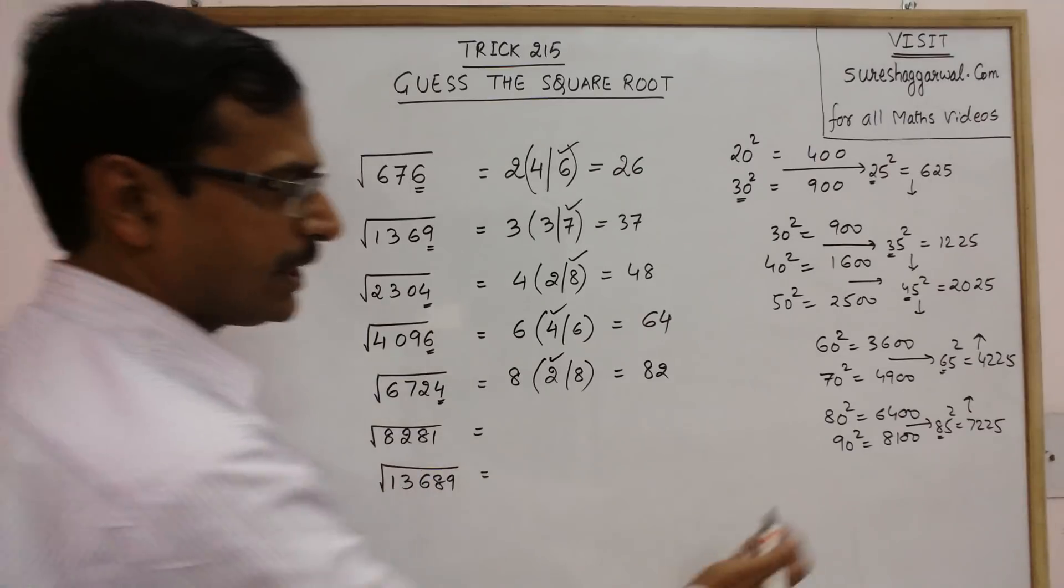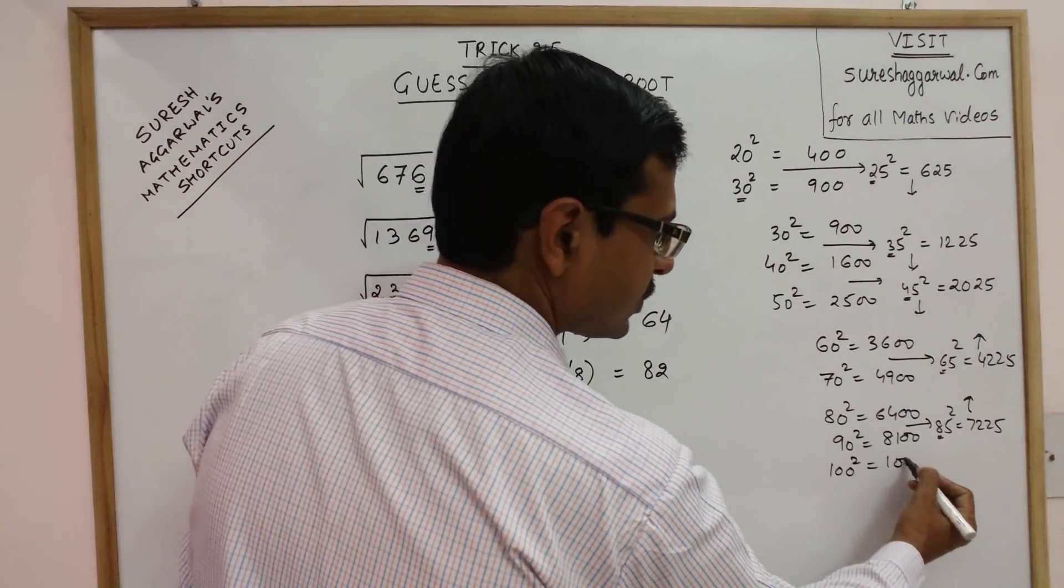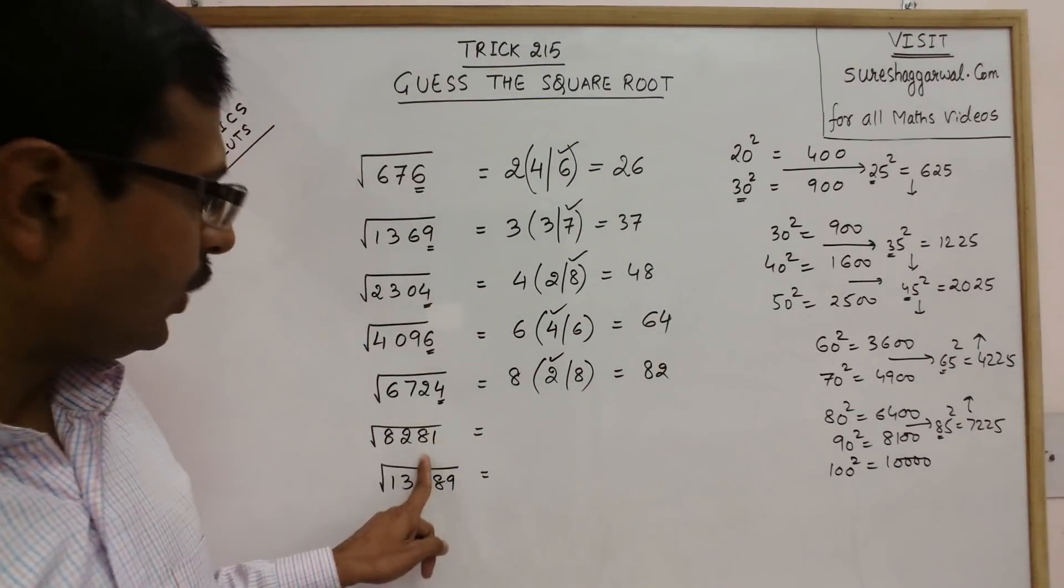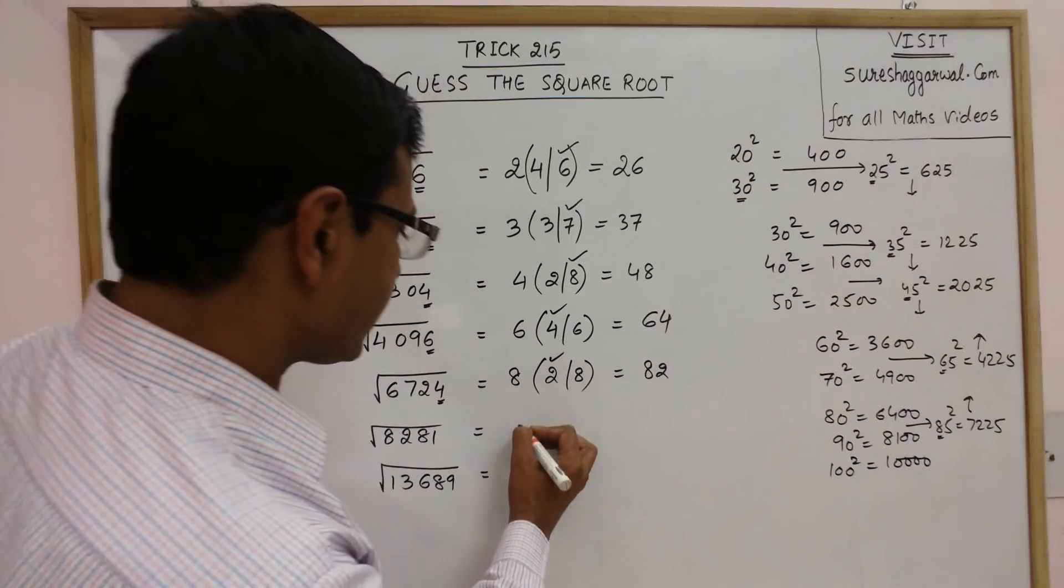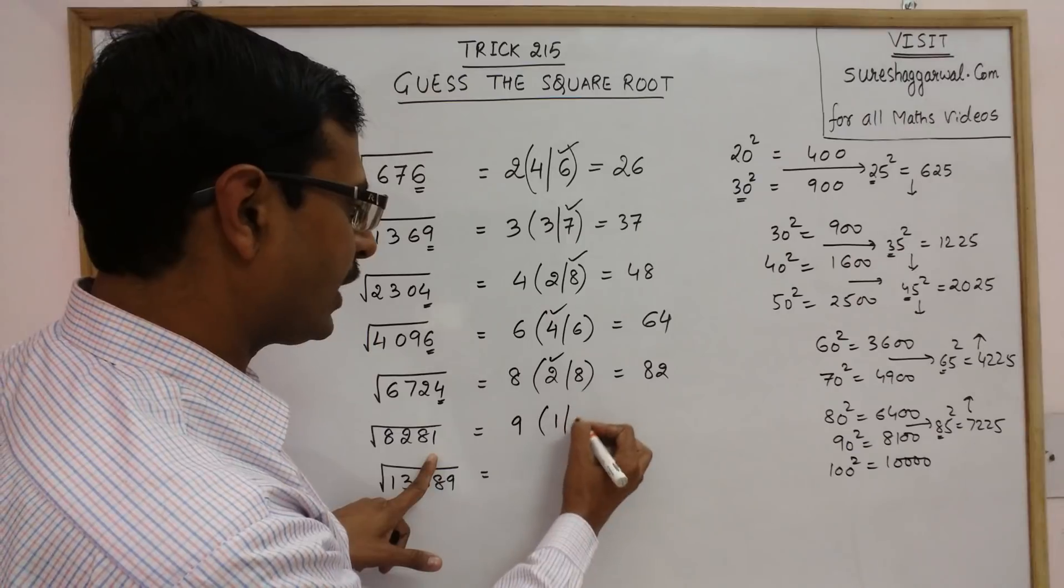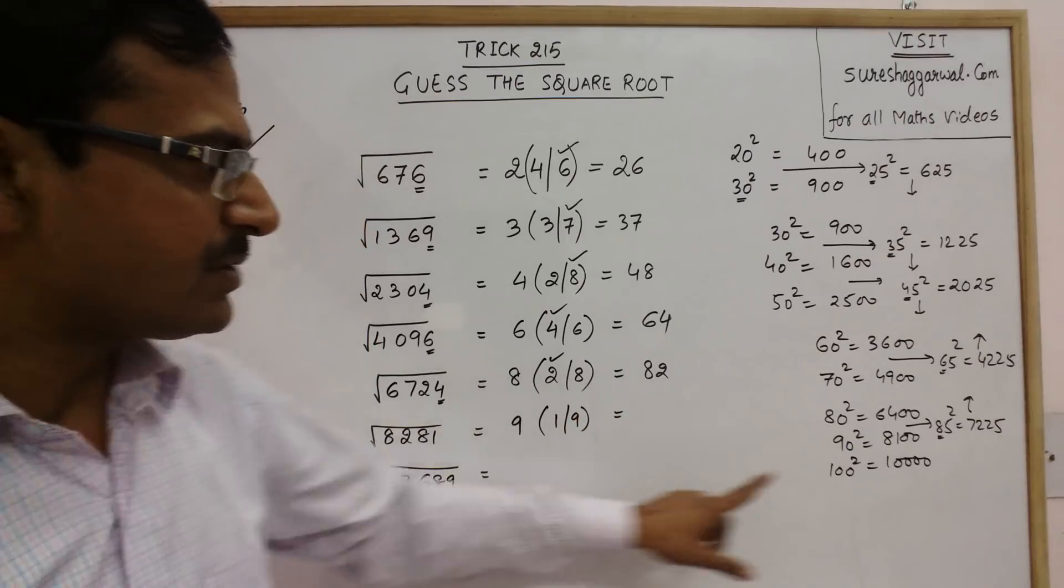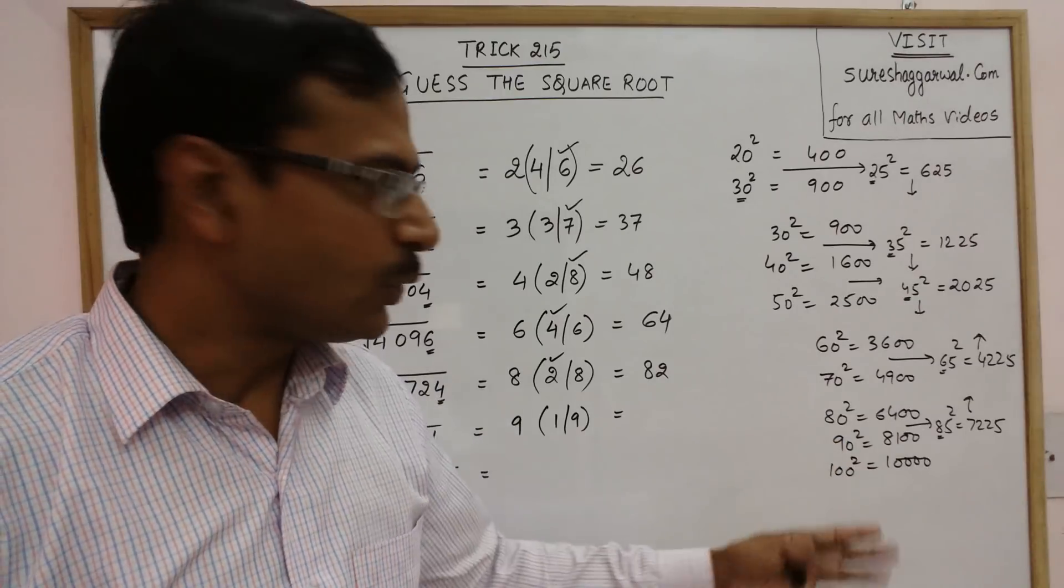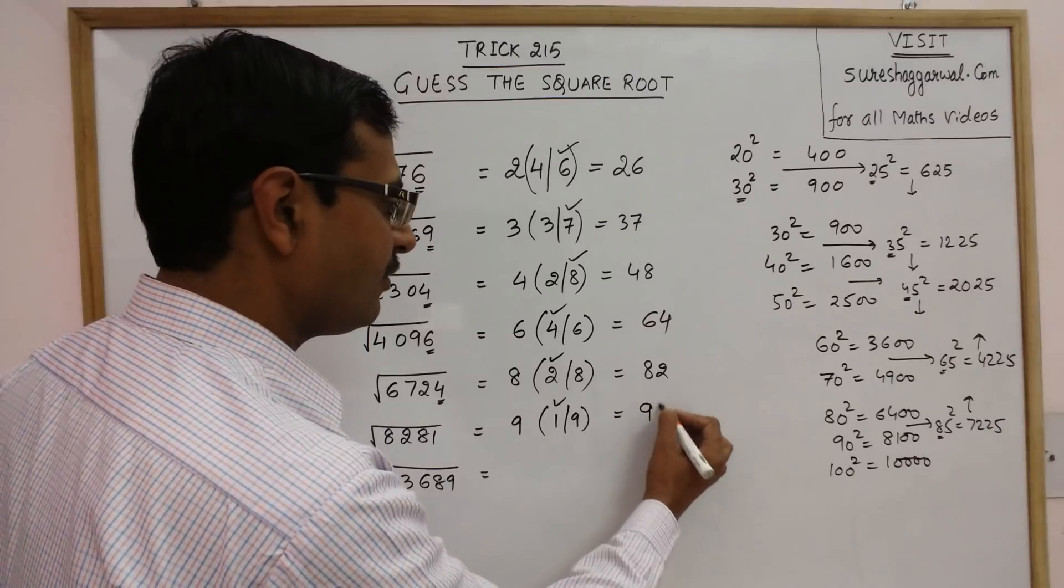8281. Now see 8100 is already here. You take 100 square as 10,000. So 8281 lies between these two numbers. So 92 to 100 starts with 9. Unit digit is 1, so either it will be 1 or 9. Now it is easy to guess because 8281 is very close to 90. So you don't need to find 95 square also. So your answer will be 91.